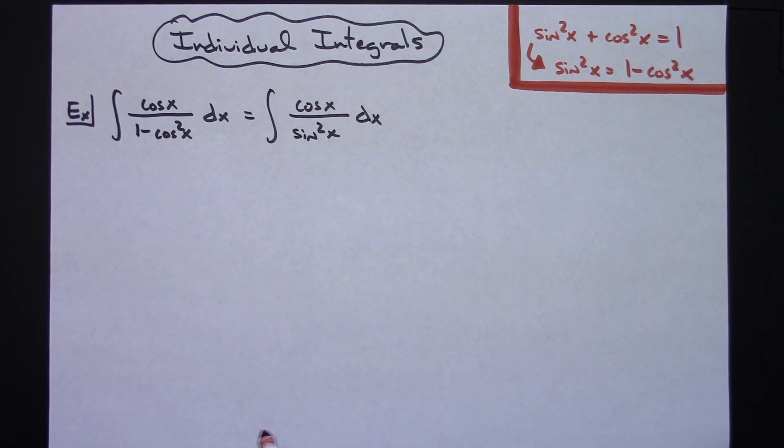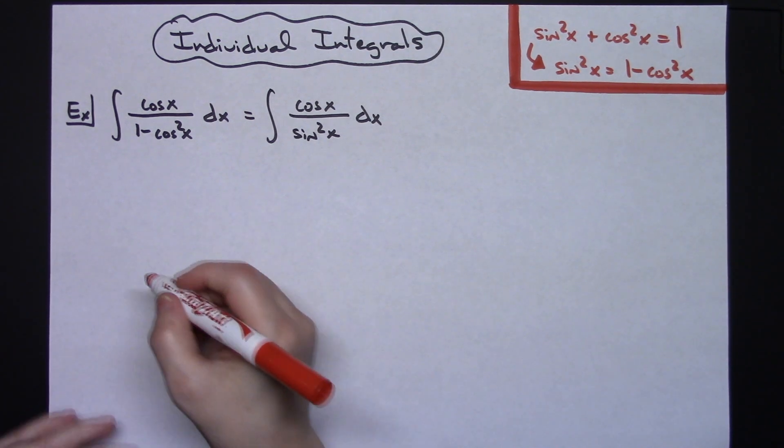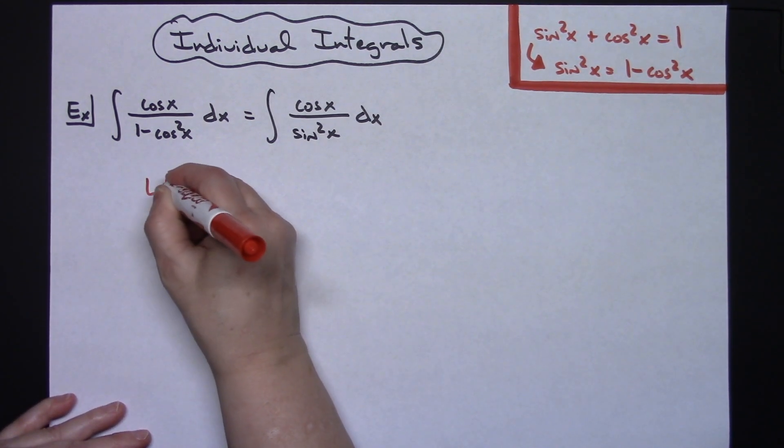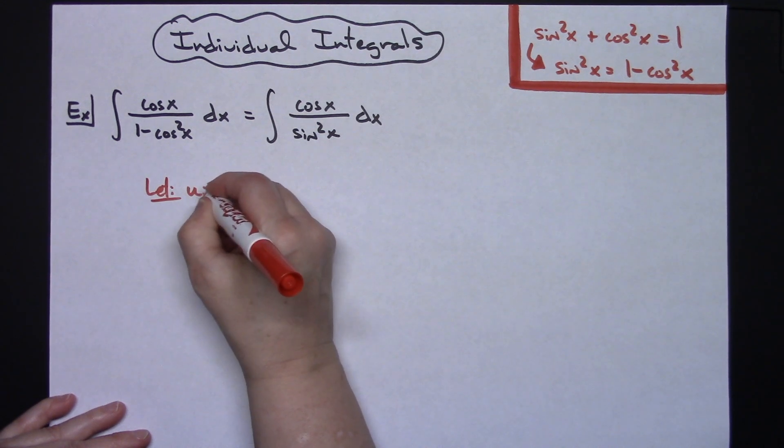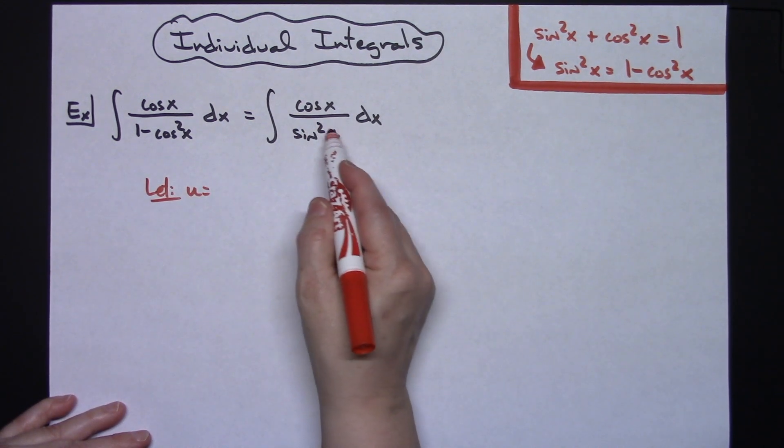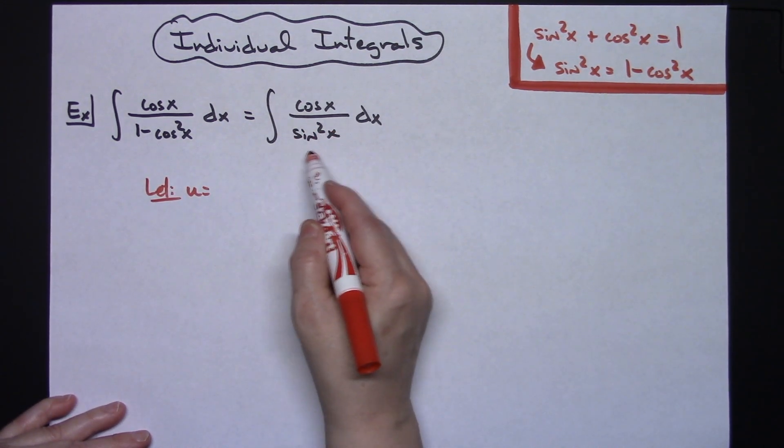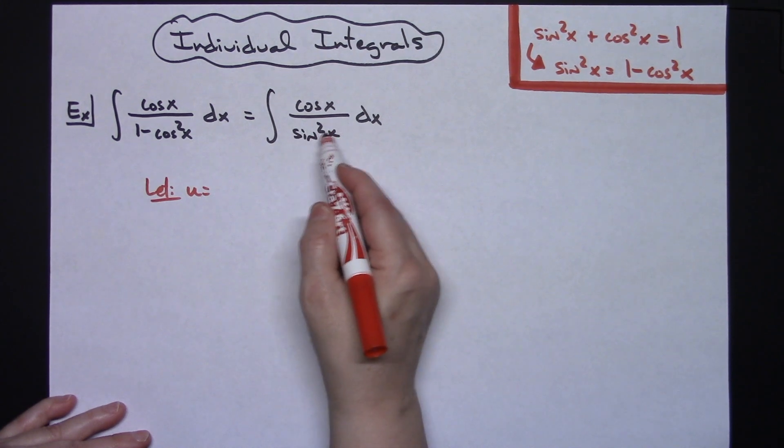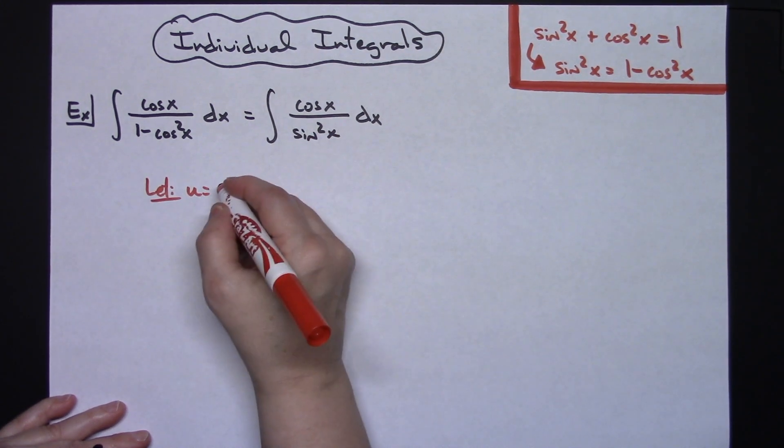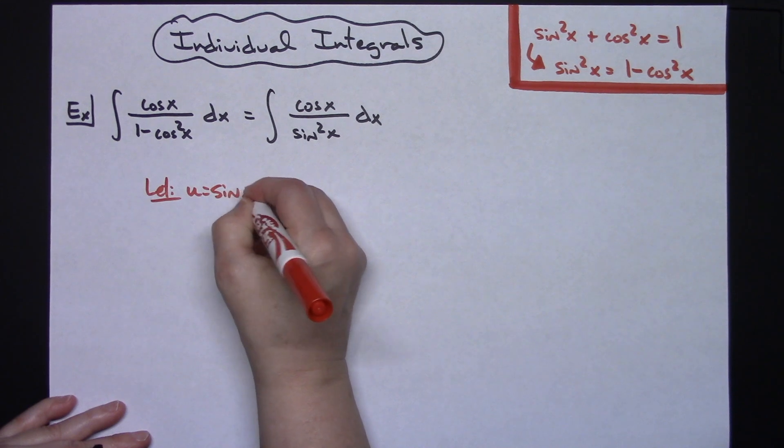From here this is just going to become a regular straightforward u substitution. So then I'm going to let my u be my inside function. If I take a look at that bottom I've got sine squared x. That means my inside function is sine x. So I'm going to let my u be sine x.